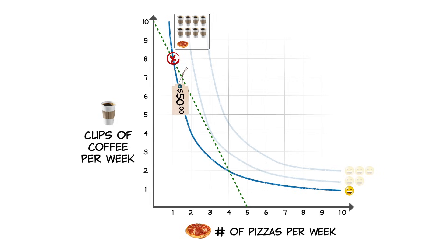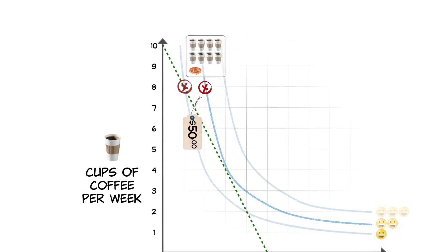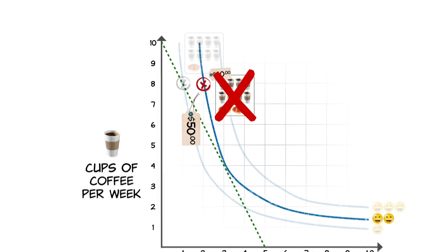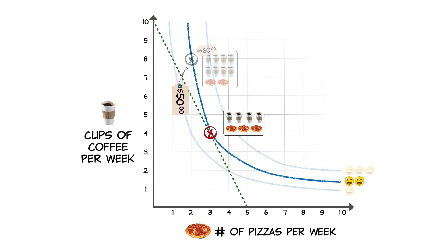This particular combination of pizza and coffee is affordable because it's on your budget line. However, you are not the happiest you could be. Given your preferences, it's clear that you would be happier if you could buy a combination with more pizza and just as many cups of coffee — but it's beyond your budget.